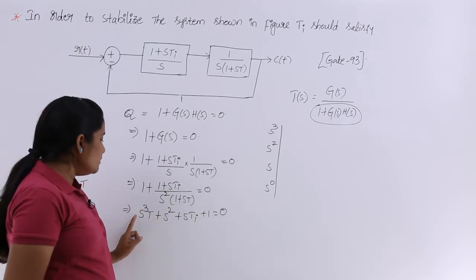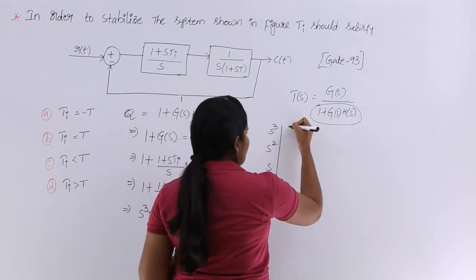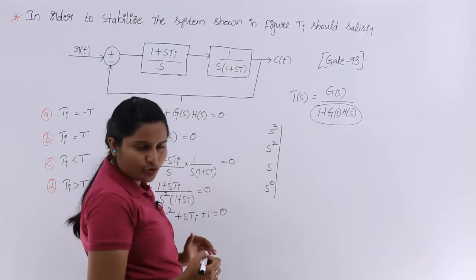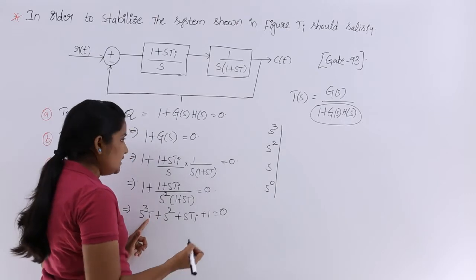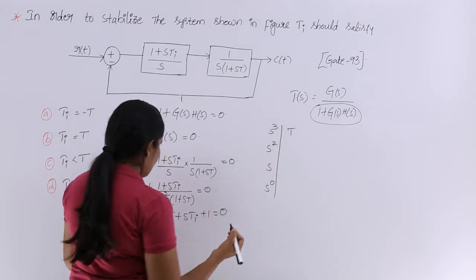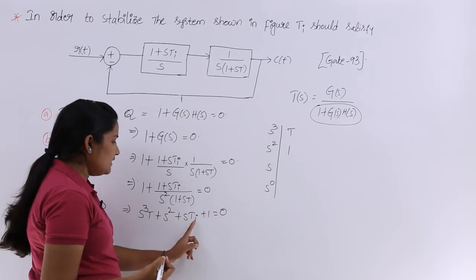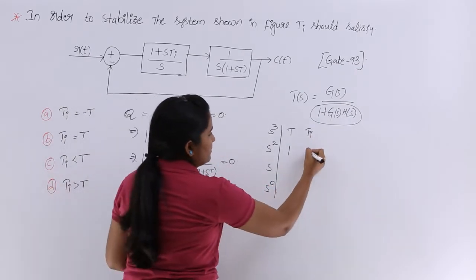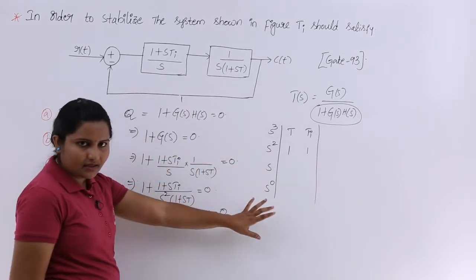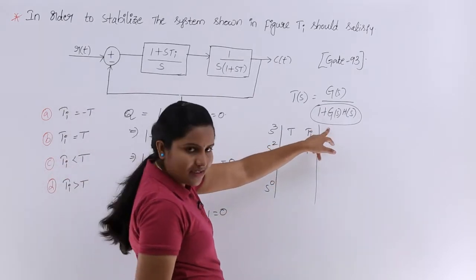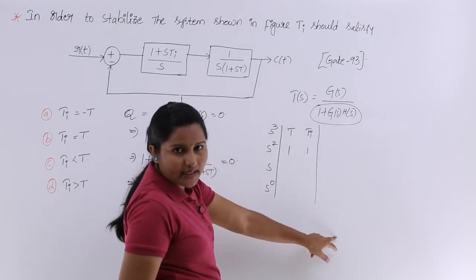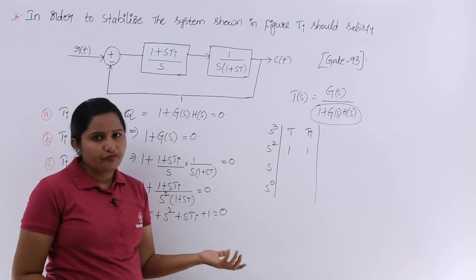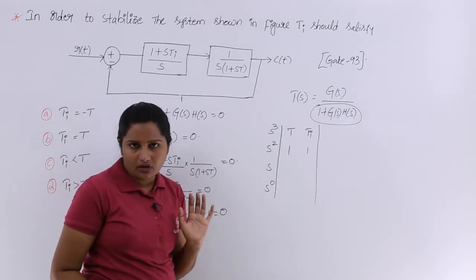Filling the Routh array rows: row S³ has entries T and Ti; row S² has entries 1 and 1. Since the characteristic equation has only four coefficients, we get only two columns in our Routh array. If there were any additional elements, we would place a 0 and close the array.